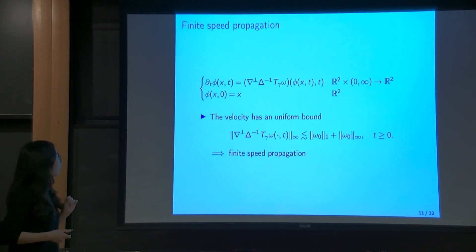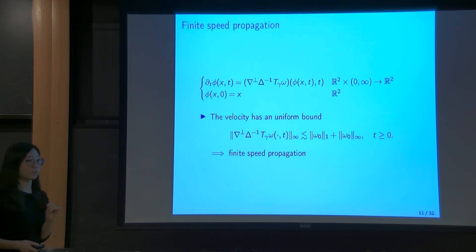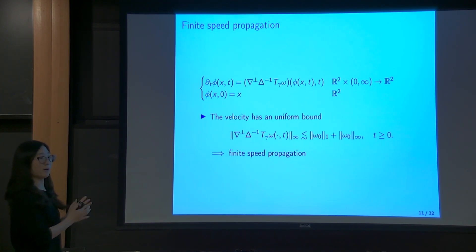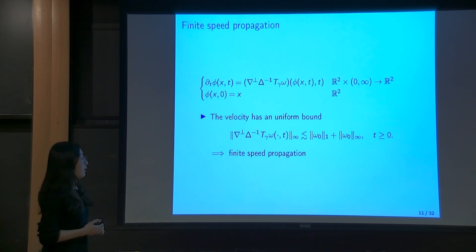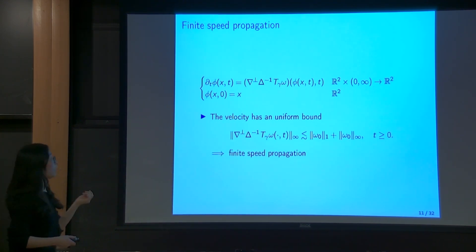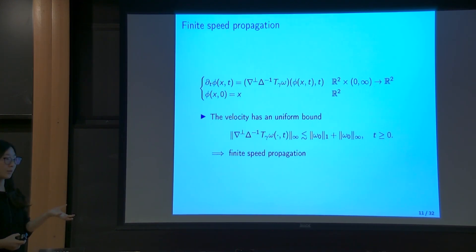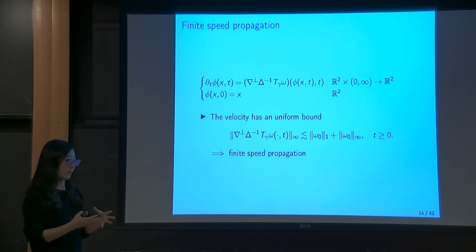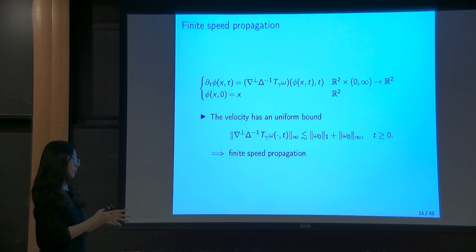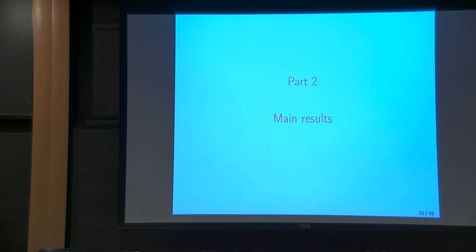We can also control the velocity in L^∞ norm by the L¹ and L^∞ norms of the solution by interpolation, and by L^p norm preservation we get a uniform bound on the velocity. This gives us a limitation on the maximum speed of propagation of particles. For example, if the initial data is compactly supported, then the support of the solution in short time will stay close to the support of the initial data — we call this phenomena finite speed of propagation.